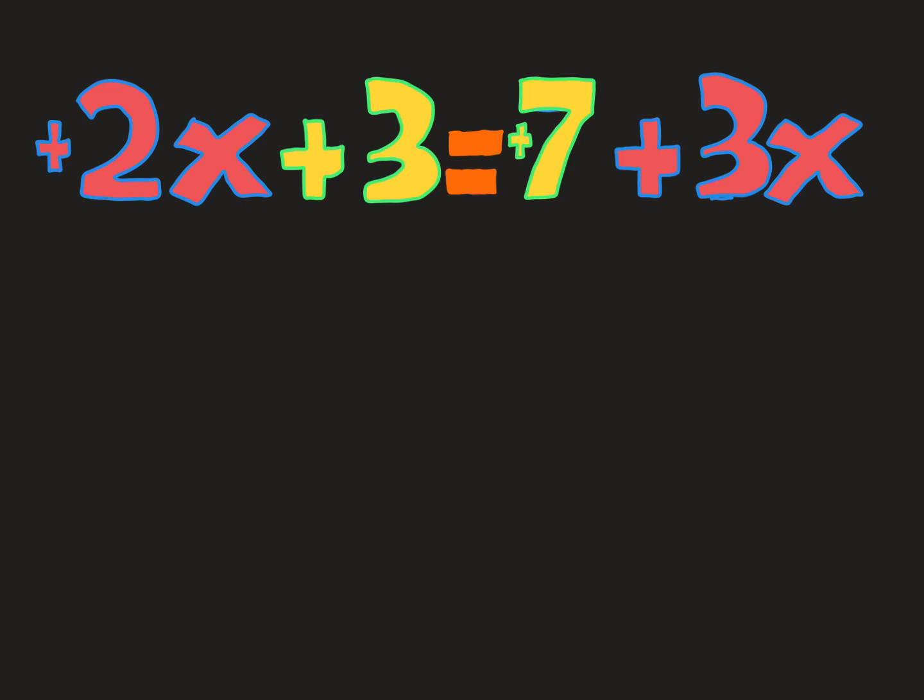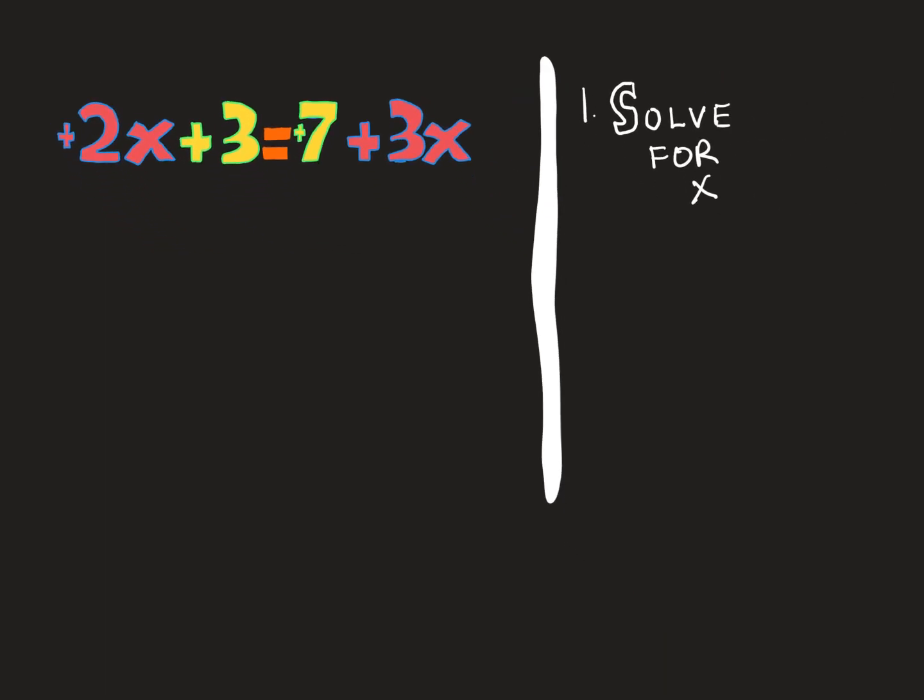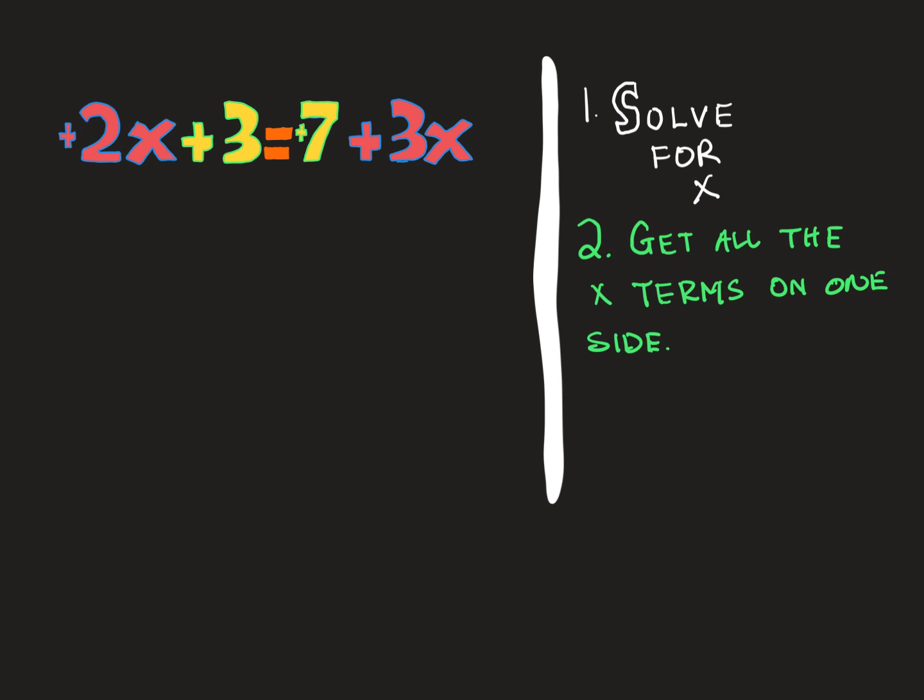So the first step is that I have to know what I'm solving for. Step 1, I have to solve for x. Step 2 then, I have to get all the x terms on one side and all the other terms on another side. So there's a really easy way to do this. Check this out.